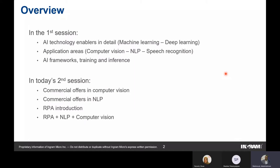This session is about AI application layer two and continues the previous session. In the first session we covered AI technology enablers: machine learning, deep learning, and application areas like computer vision, natural language processing, and speech recognition — including the pipeline for each and the modules inside each of these fields.